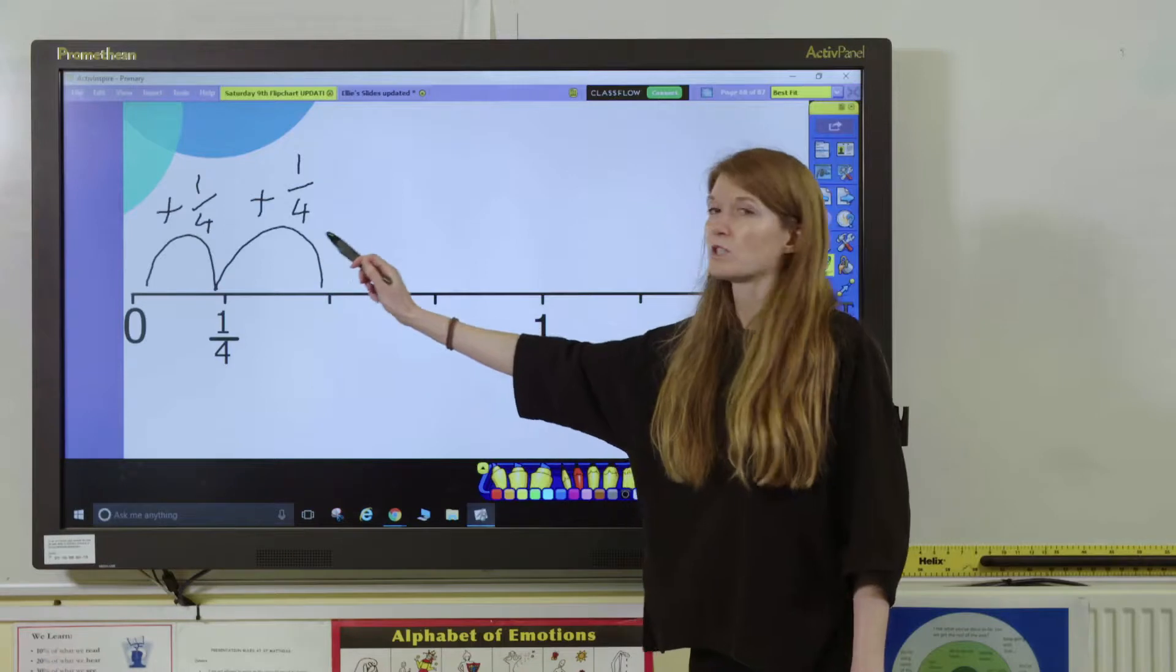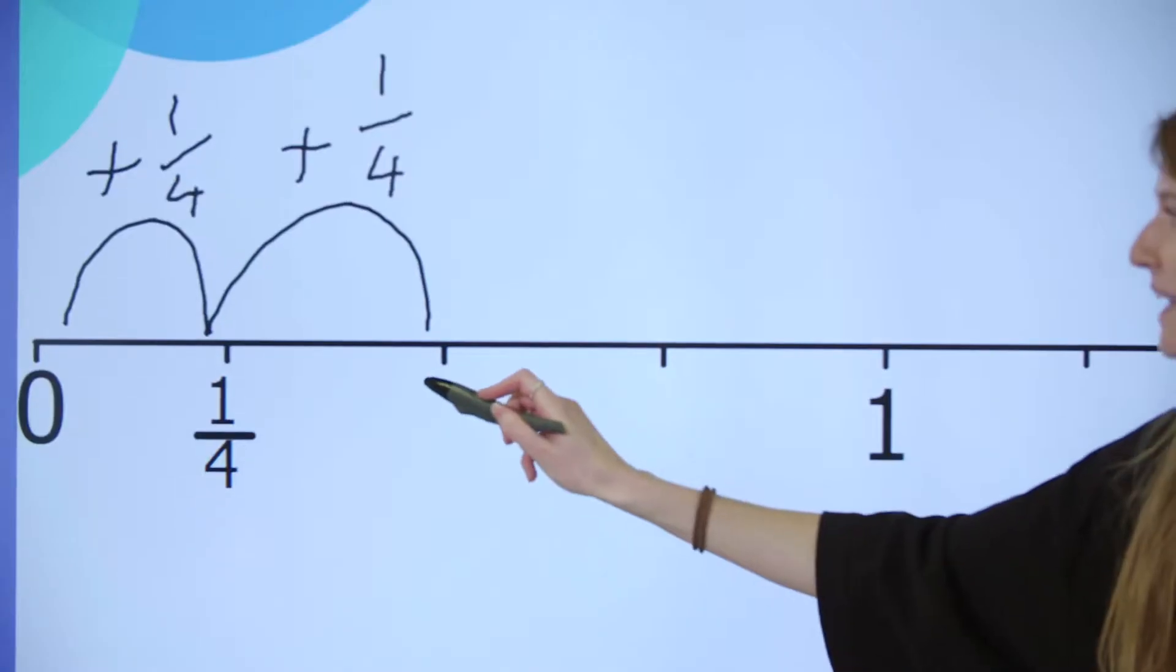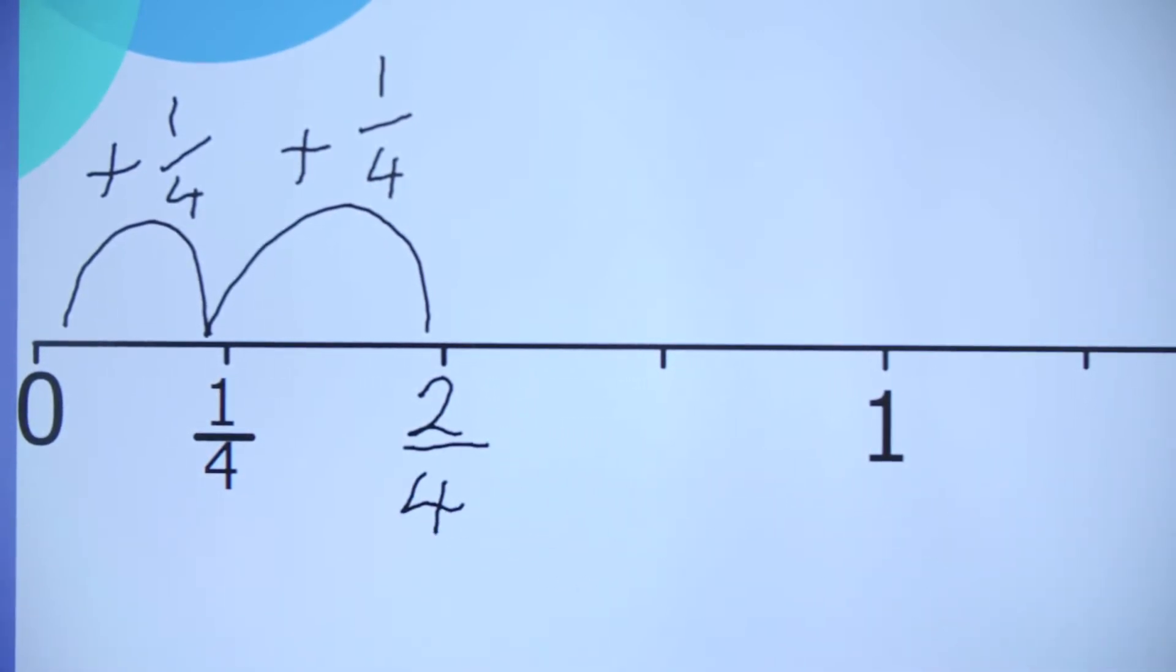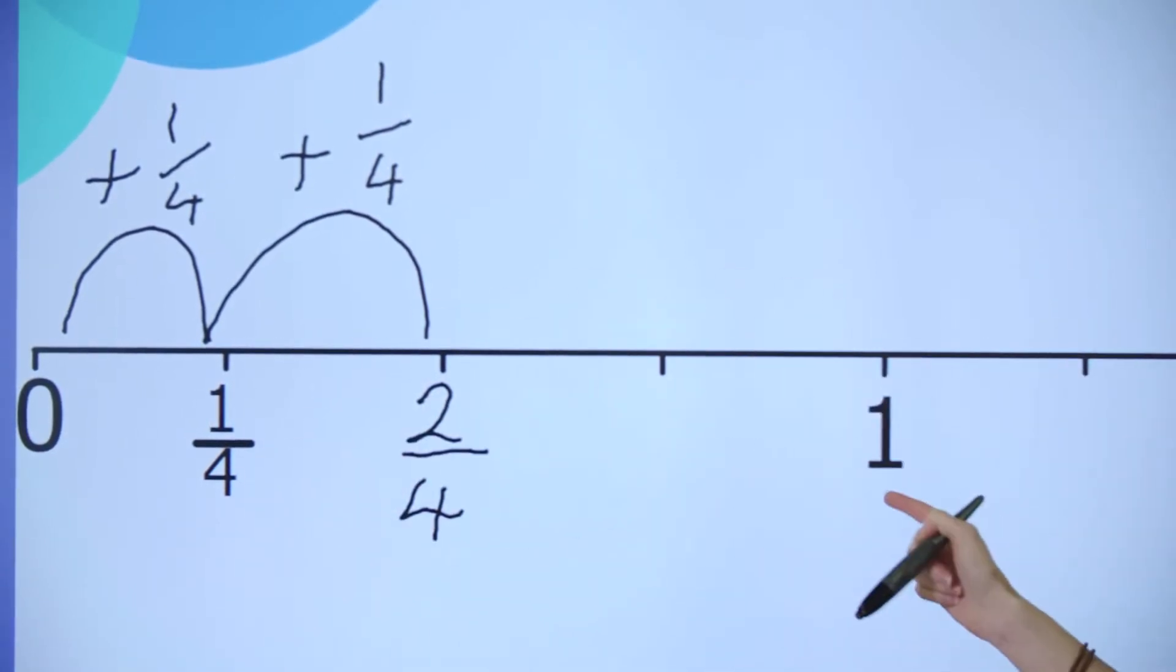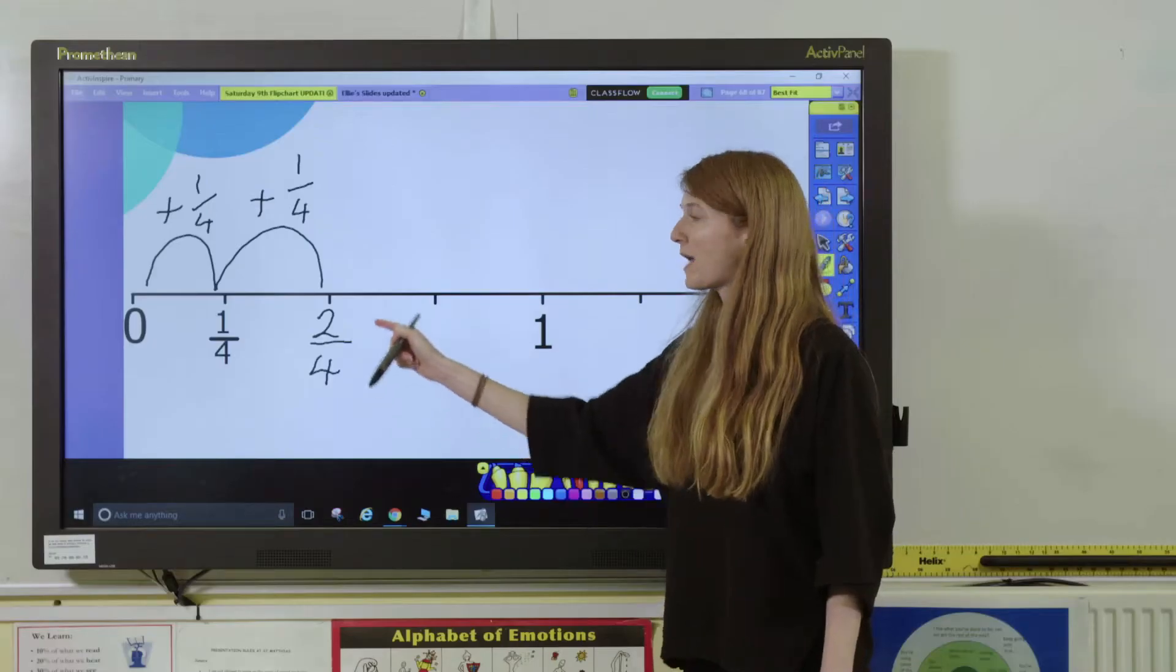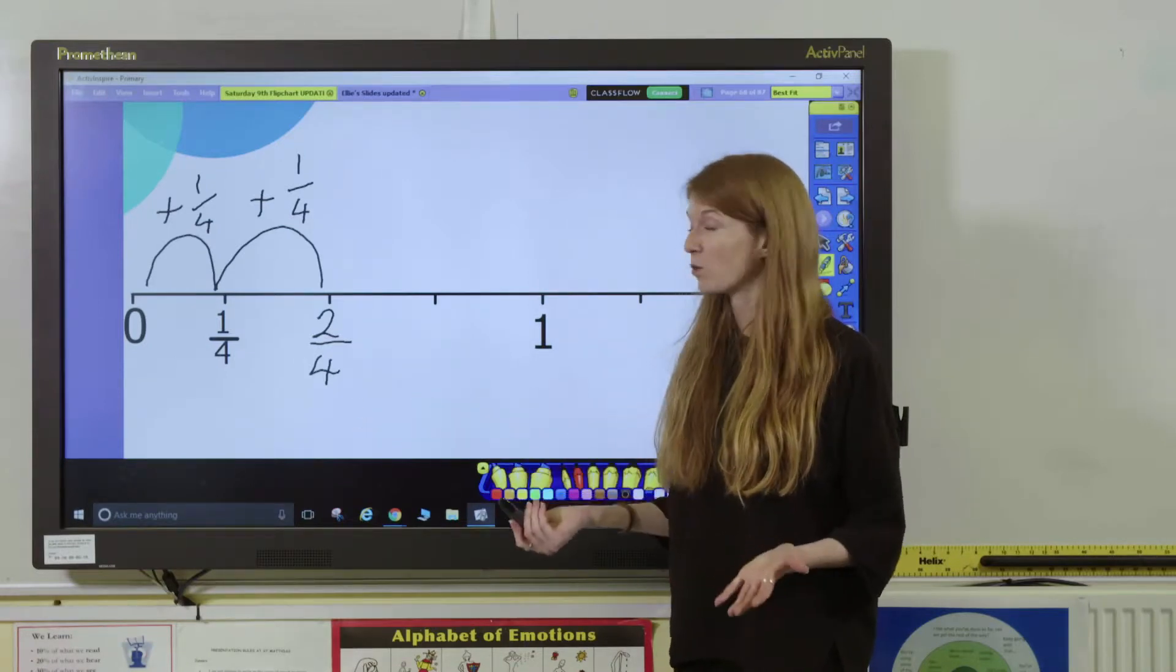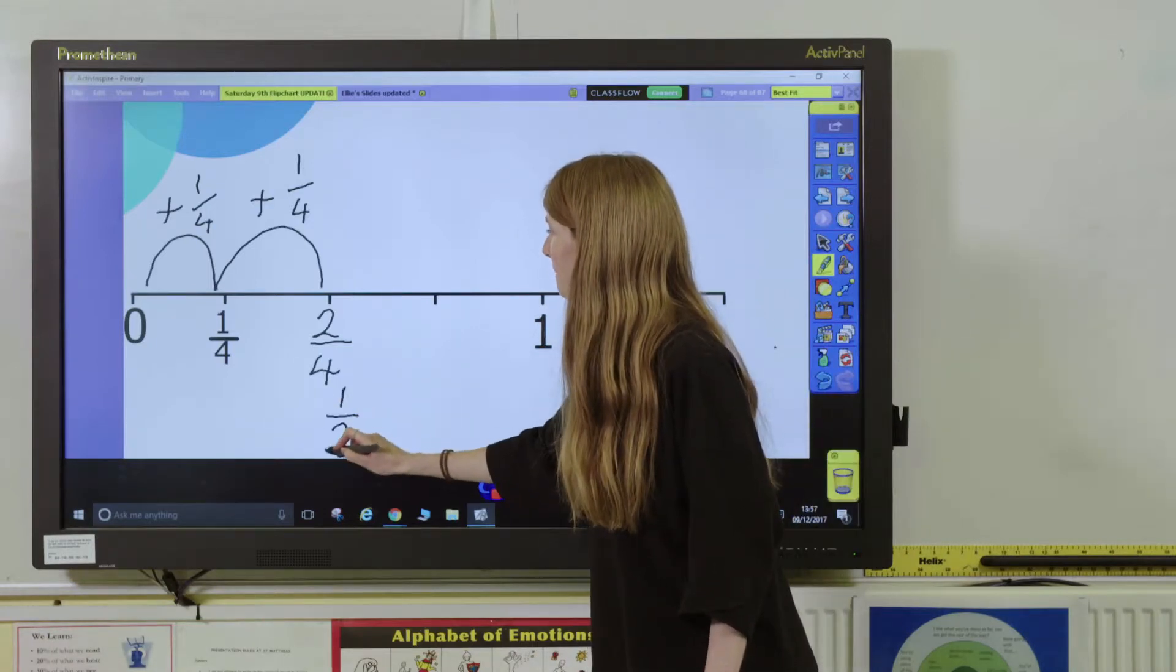They add a quarter each time. This is a really nice opportunity for them to see that yes this is going to be two quarters but two quarters is also halfway between zero and one. So how else could we express this as a fraction, getting pupils to really think about their equivalent fractions there? We could also express it as a half.